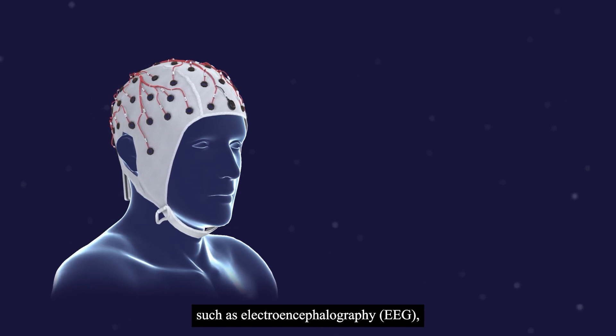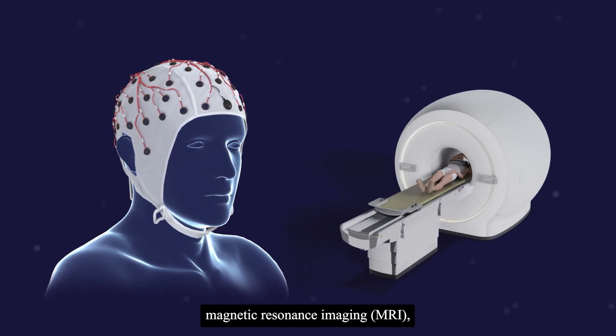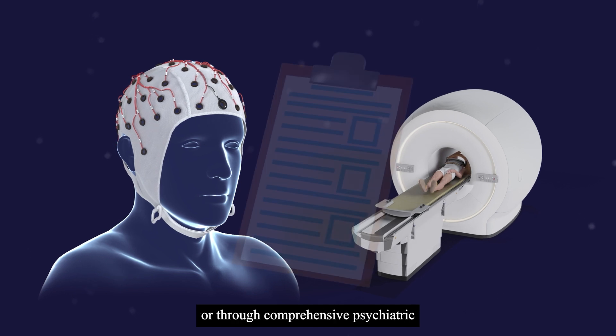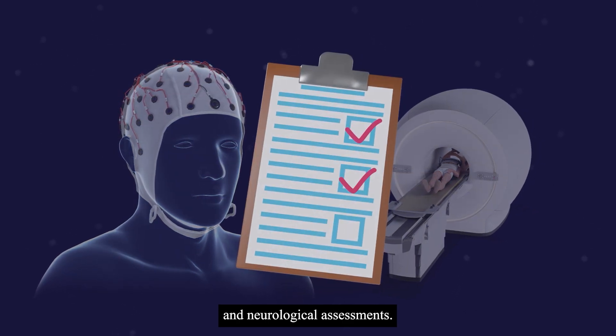Functional changes can be monitored across the whole brain using techniques such as electroencephalography (EEG), magnetic resonance imaging (MRI), or through comprehensive psychiatric and neurological assessments.